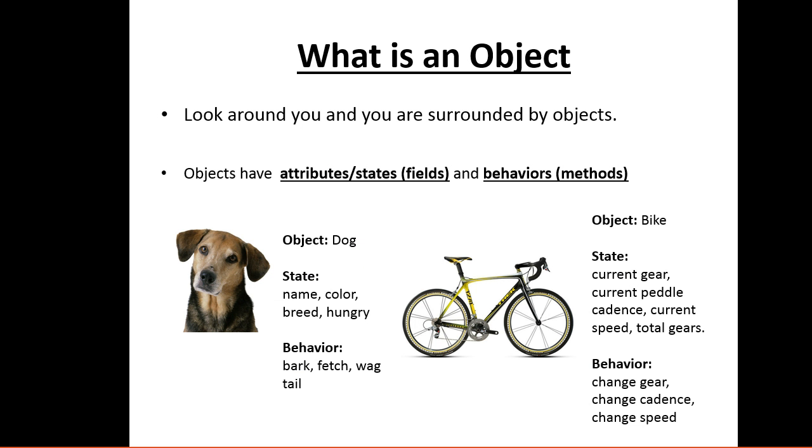So what is an object? Look around you - you're surrounded by them. Objects have attributes or states, which we call fields, and behaviors, which are methods. An example could be a dog: the state could be its name, color, breed, is it hungry. Behavior could be it barks, it fetches, it wags its tail.